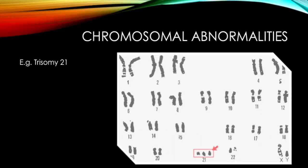There are also chromosomal abnormalities where children have either too little or too many chromosomes, an example of which is Trisomy 21, also known as Down syndrome, since there are three 21st chromosomes.